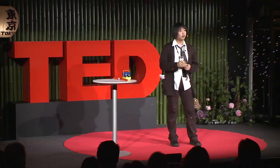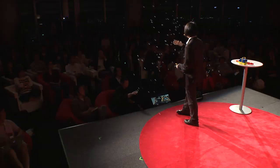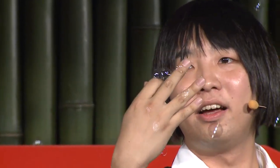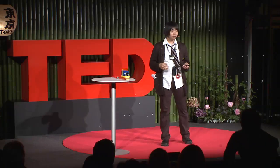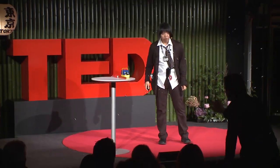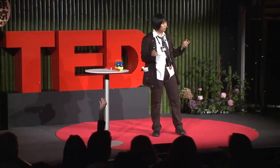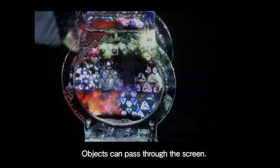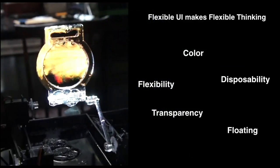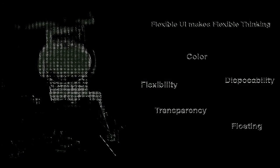These look like soap films, but it's not easy to replicate. From the viewpoint of the soft film UI, we can redefine the interfaces. Flexible thinking makes flexible UIs — like color flexibility, disposability, or floating-like images.